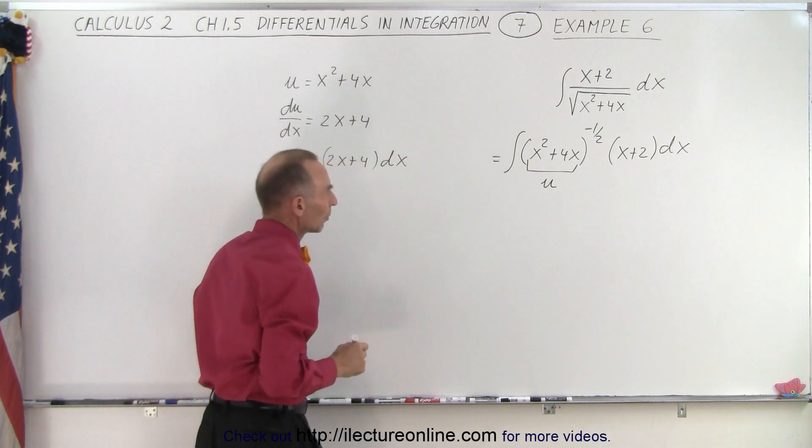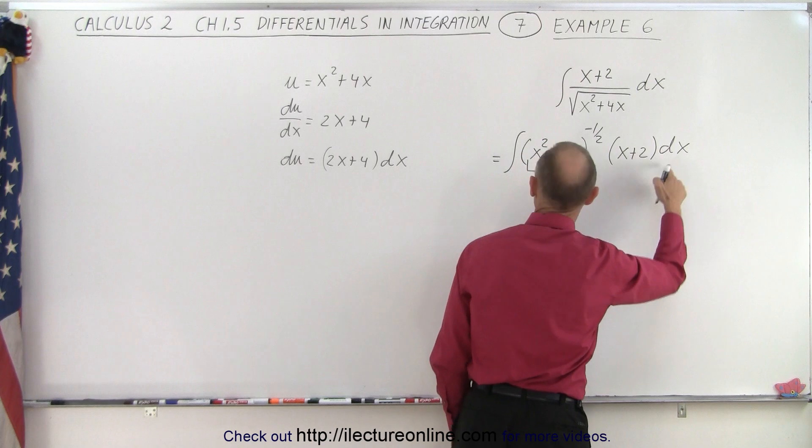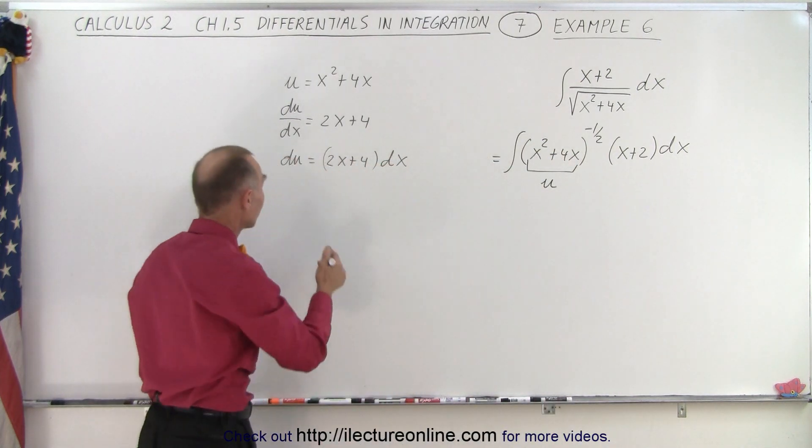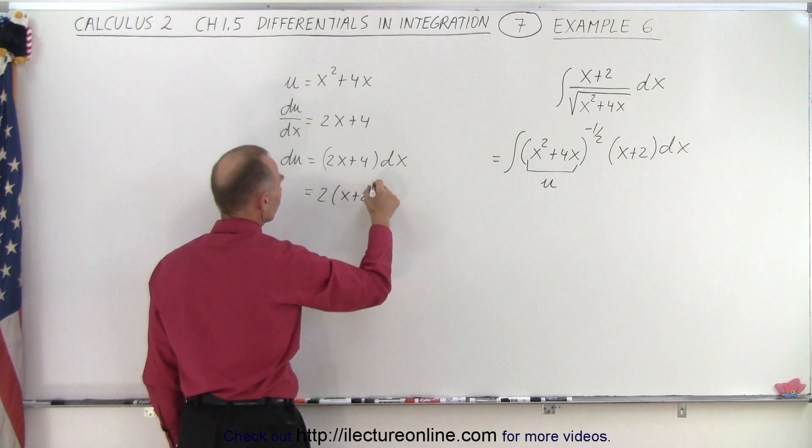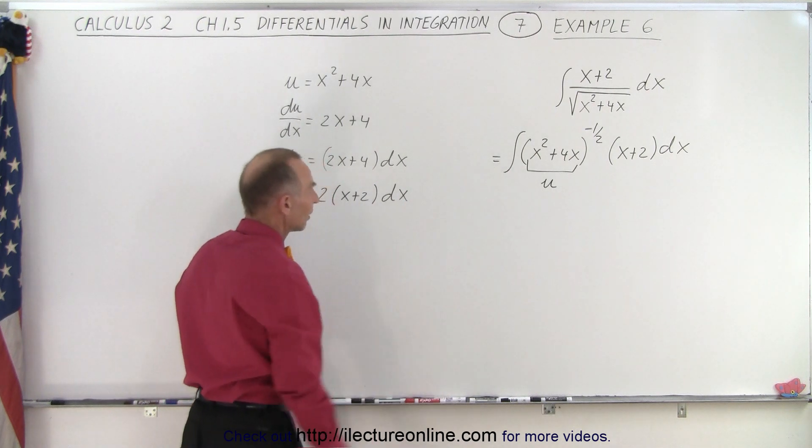And so we come over here, we look at that, and we have x plus 2 times dx, but we need 2x plus 4. Essentially we can rewrite this as 2 times x plus 2 times dx, so now it becomes clear that we're missing the 2.